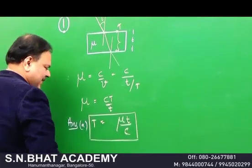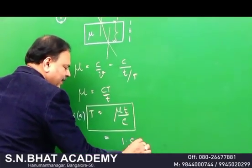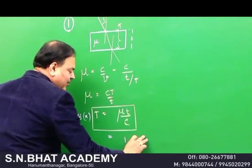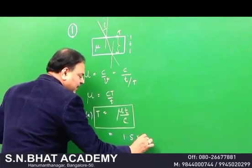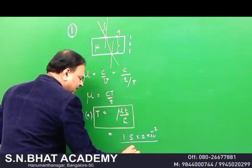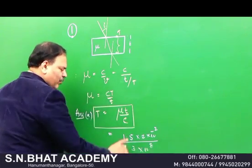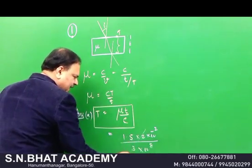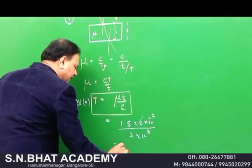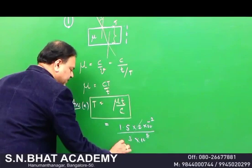Sometimes this problem is asked with numbers: refractive index 1.5, thickness 2 cm = 2×10⁻² m, velocity of light 3×10⁸ m/s. Then T = 1.5 × 2×10⁻² / (3×10⁸). The 3s cancel, giving 10⁻² / 10⁸ = 10⁻¹⁰ seconds.